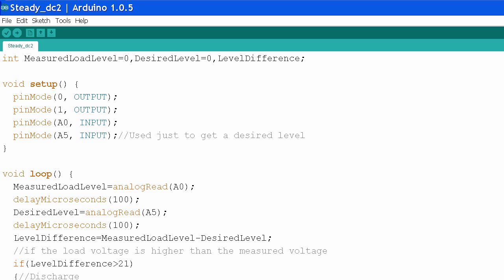Notice that I have used a new variable called level difference at the top there. In the loop I measure the analog voltages as before. I calculate the difference between them which produces positive or negative results.